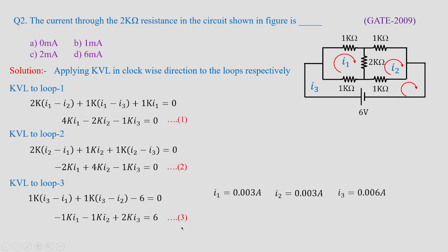Solving equations 1, 2, and 3, we get I1 = 0.003 A (3 mA), I2 = 3 mA, and I3 = 6 mA. The requirement is to calculate the branch current going through the 2kΩ resistor. I1 − I2 = 3 mA − 3 mA = 0 amperes. The option given is 0 milli-amperes — so tick option A. If the filter banks are given, you can directly write 0 amperes.